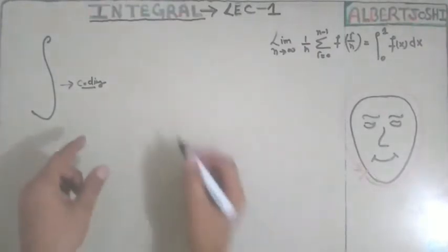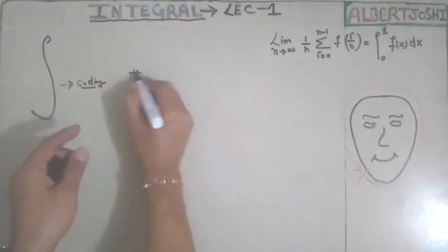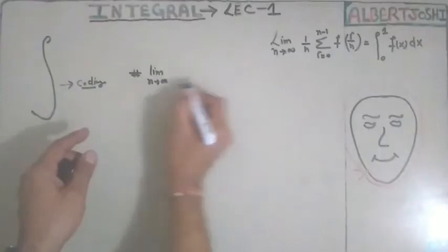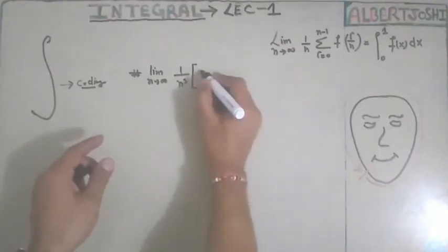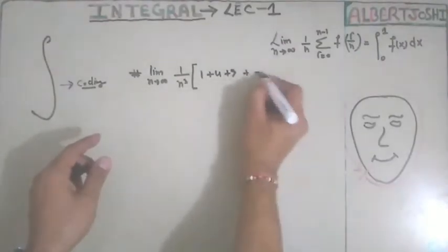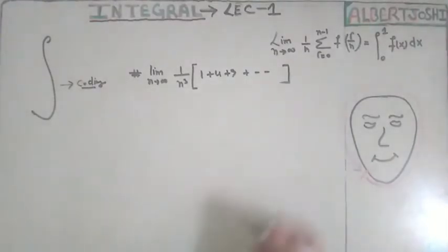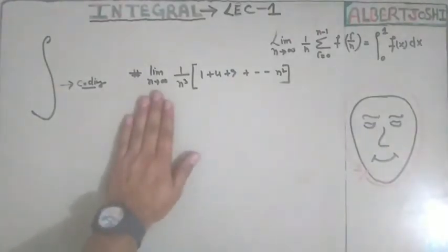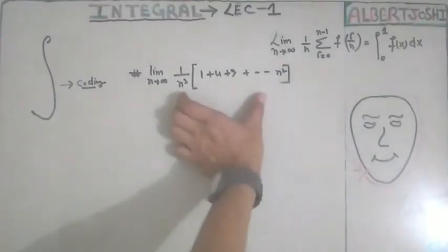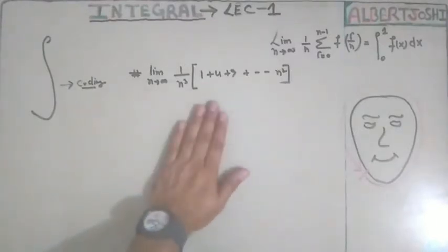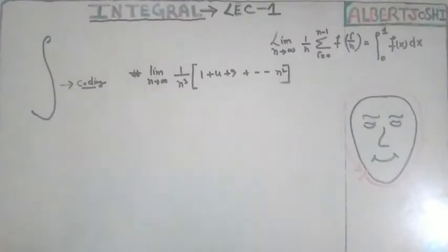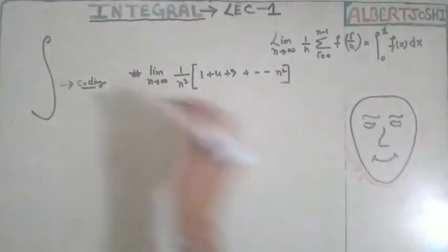Let's use one example. Suppose you have a question: limit n tends to infinite, 1 upon n cube, multiplied by the sum 1 plus 4 plus 9 plus up to n square. When n tends to infinite you have to find the summation of such a series. That is a very difficult task, so I will convert this summation to integration.